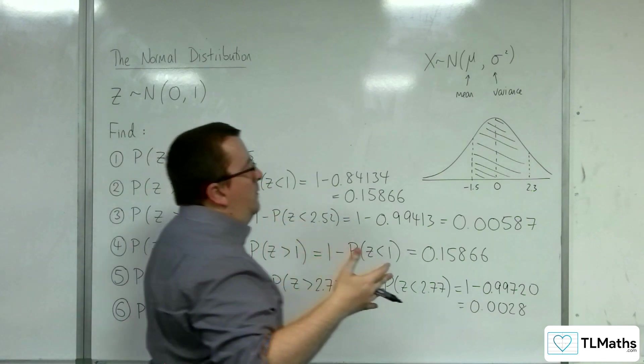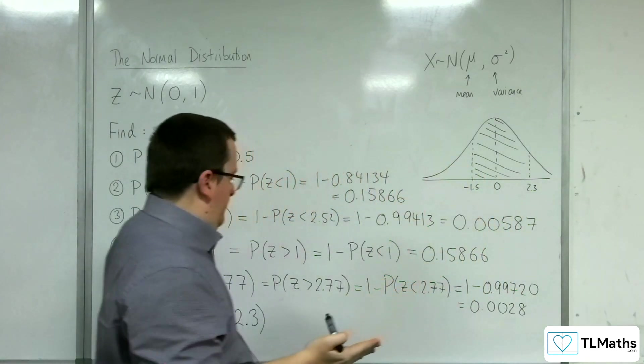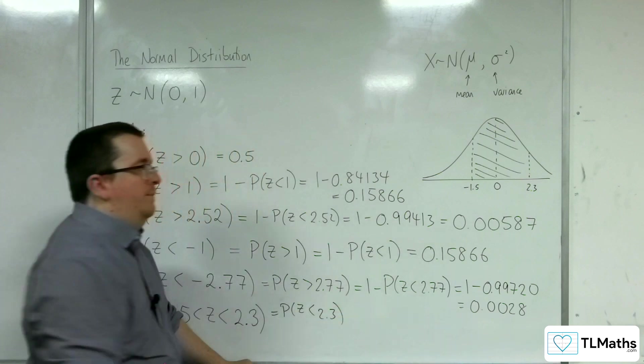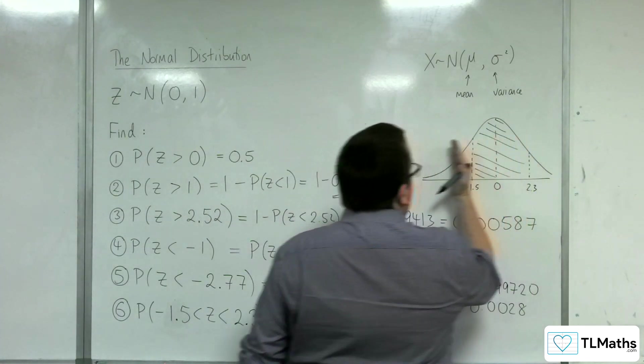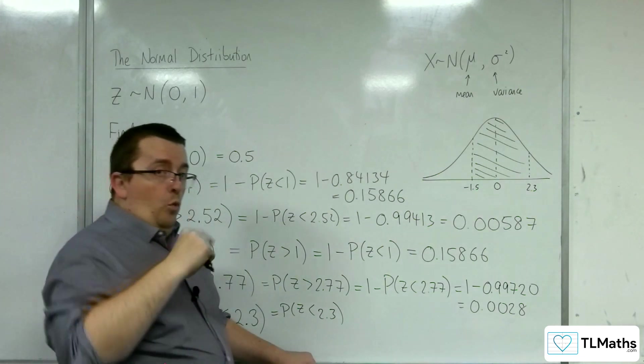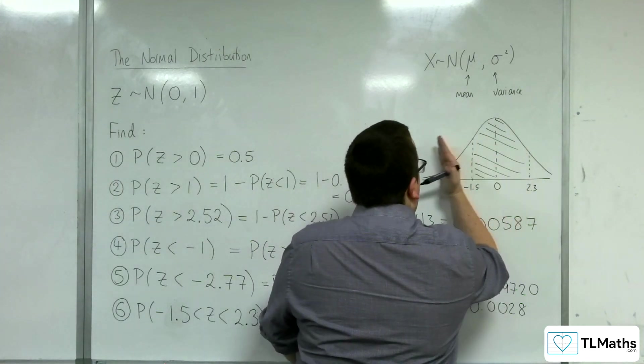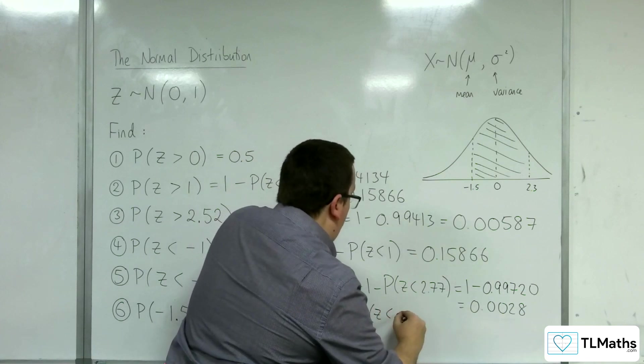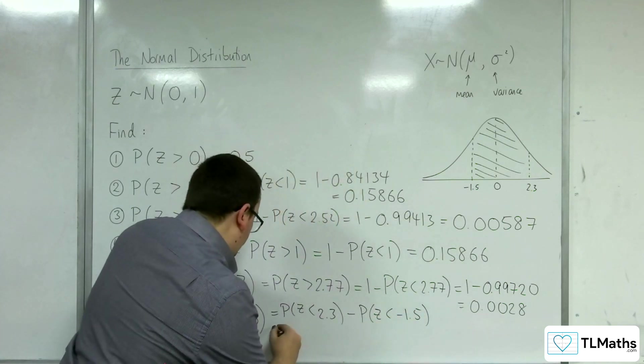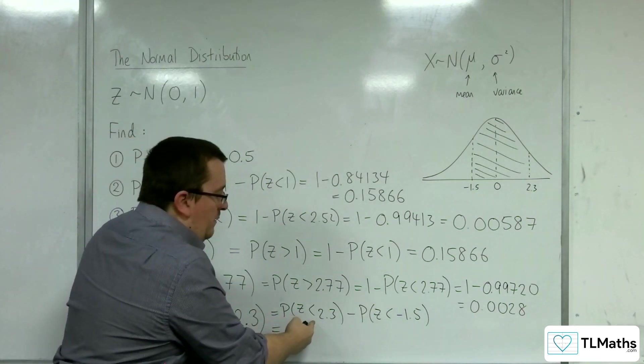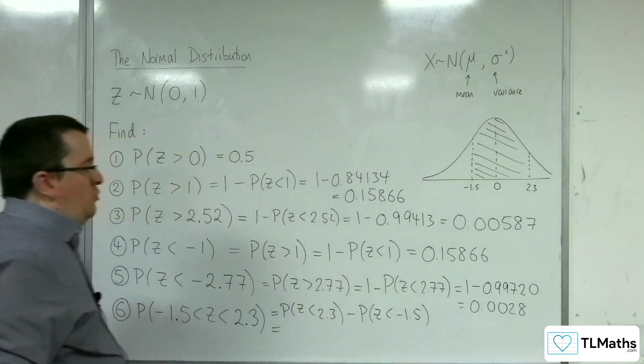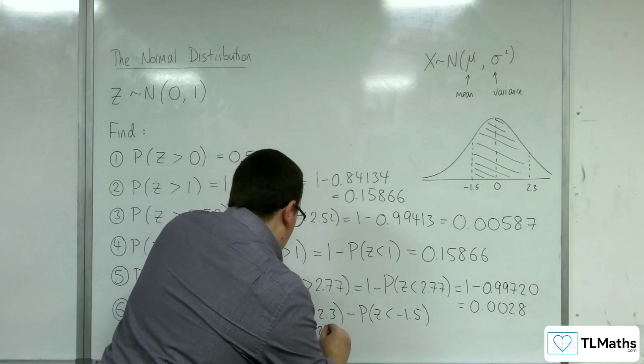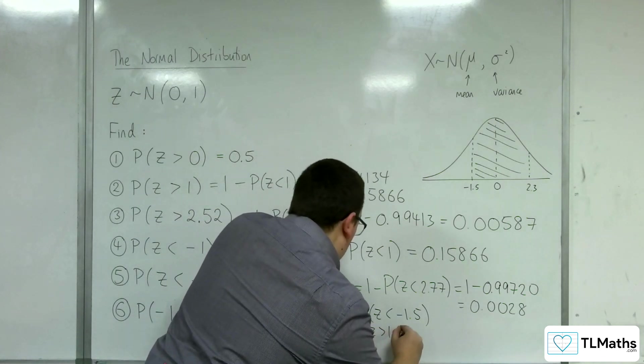So I'm wanting to find that shaded region. So how can you do that? Well, the way to think about this is that if I worked out the probability of Z being less than 2.3, then that would give me everything from that dotted line down, everything that way. I don't want all of it. I want all of that take away from that dotted line down, because I don't want that region. So I don't want Z being less than minus 1.5.